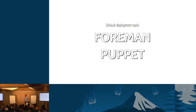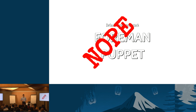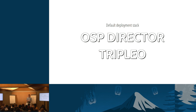Around the RHEL OSP 6 timeframe it was all Foreman and Puppet — so you went from the agentless Puppet operation that Packstack was to something that was not only also Puppet-based but also included bare metal automation and multi-node orchestration. But then they came up with something else again. The default deployment stack for RHEL OSP 7 is called OSP Director, based on RDO Manager, which in turn uses TripleO and Ironic for deployment and bare metal orchestration.